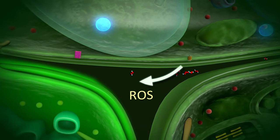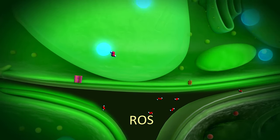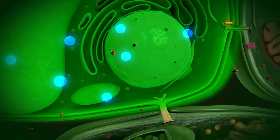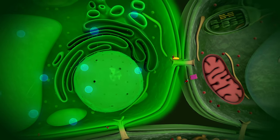Once the signal reaches the next cell in the path, the process is repeated, and ROS production in the next cell is turned on.